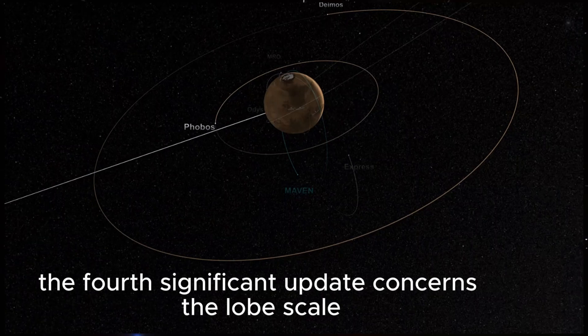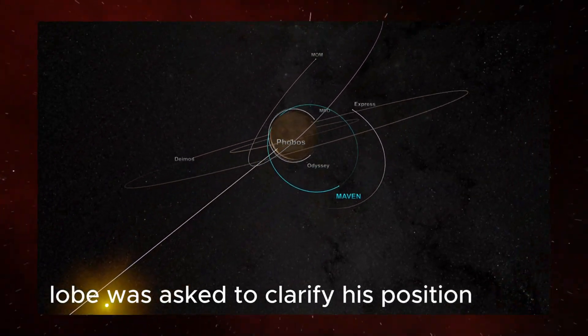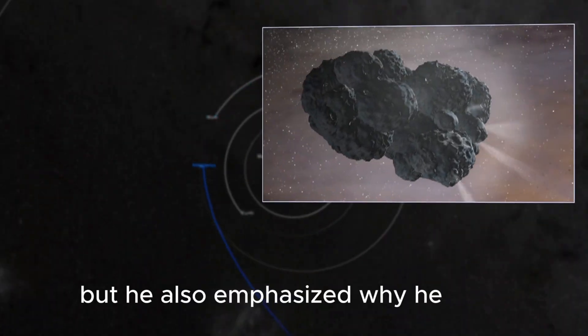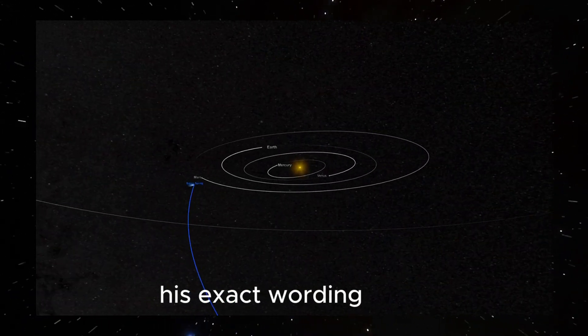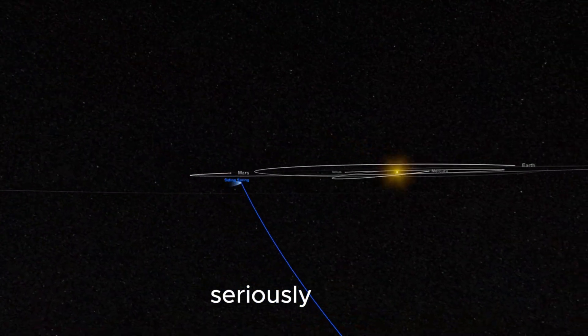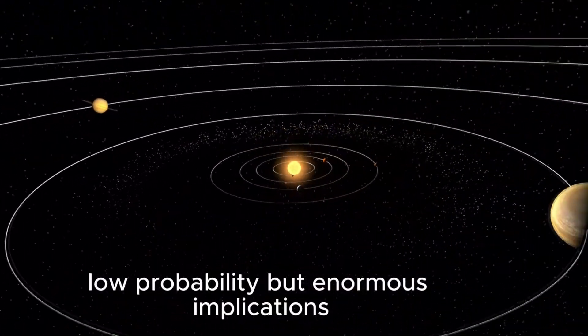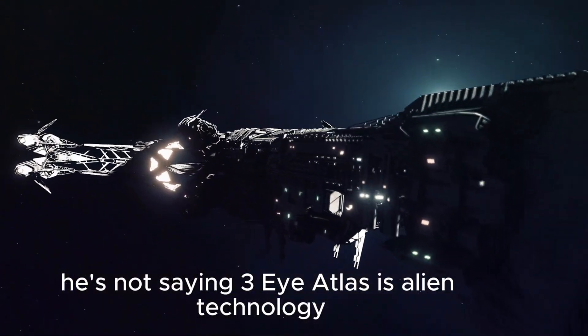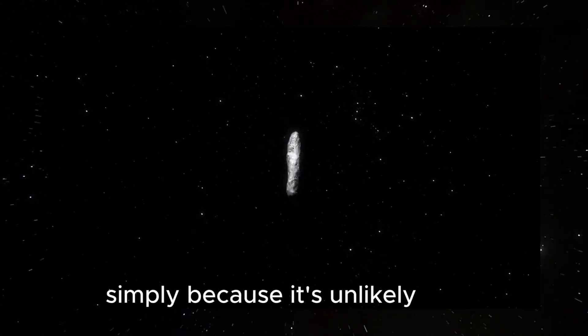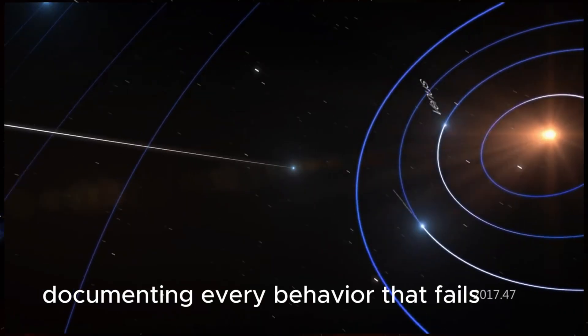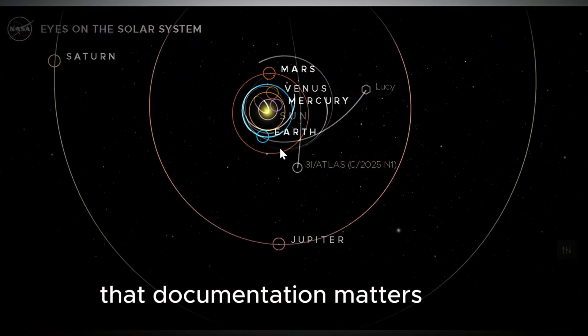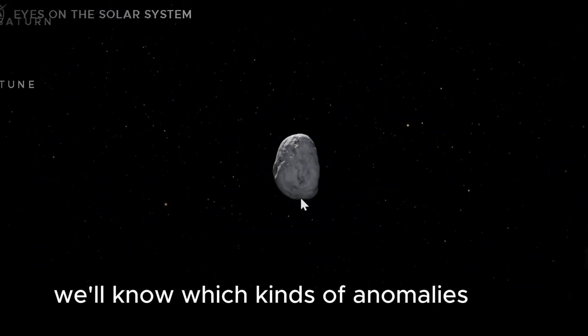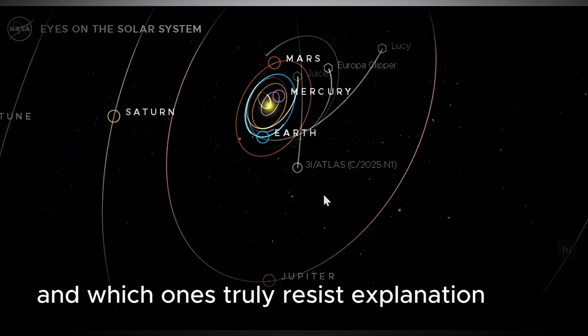The fourth significant update concerns the Loeb scale itself. In a recent interview, Loeb was asked to clarify his position on the nature of 3i Atlas. He repeated what he's been saying since July, that 3i Atlas is most likely a natural object. But he also emphasized why he continues to document these anomalies. His exact wording focused on taking the technological interpretation seriously because of the possibility of a black swan event. Low probability but enormous implications. Here's what makes Loeb's approach different from most scientists. He's not saying 3i Atlas is alien technology. He's saying we can't dismiss the possibility simply because it's unlikely. And he's systematically documenting every behavior that fails to match standard comet models. That documentation matters because it establishes a baseline. When the next interstellar visitor arrives, we'll have 3i Atlas as a reference point. We'll know which kinds of anomalies can still arise from natural processes and which ones truly resist explanation.